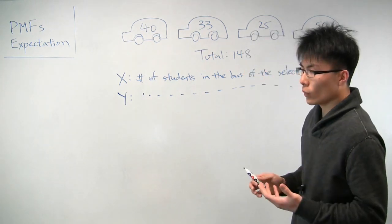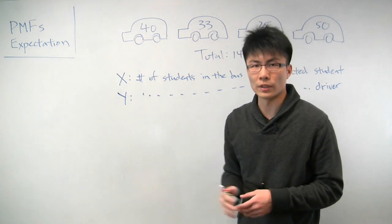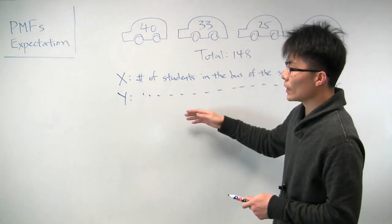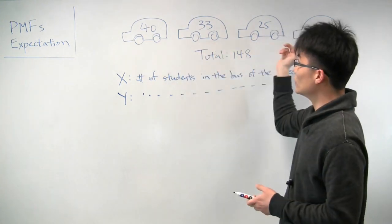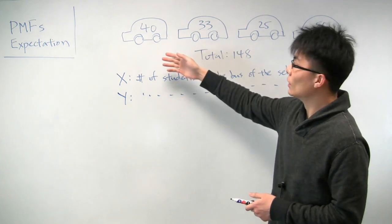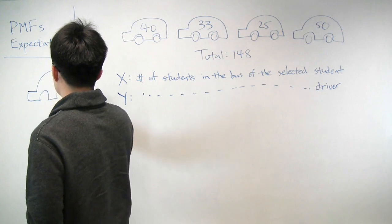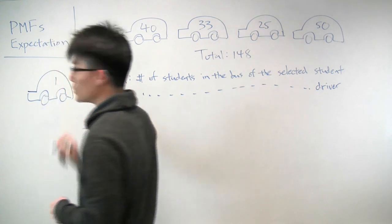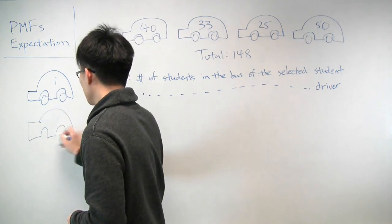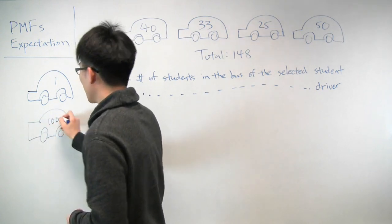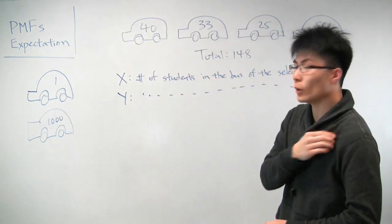It might not be immediately clear which one would be higher. Or you might even say that maybe it doesn't make a difference, they're actually the same. But a useful way to approach some of these questions is to try to take things to the extreme and see how that plays out. So let's take a simpler example and take it to the extreme. Suppose instead of four buses carrying these number of students, we have only two buses. One bus that has only one student, and we have another bus that has 1,000 students.